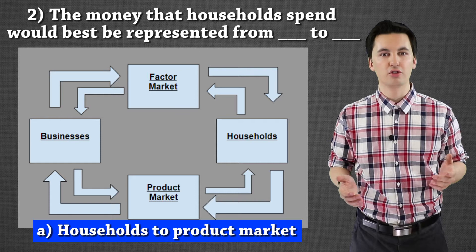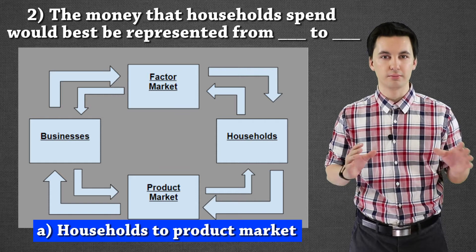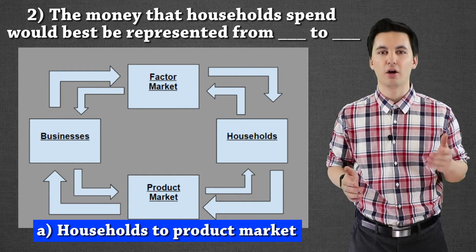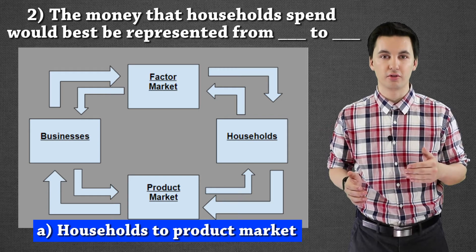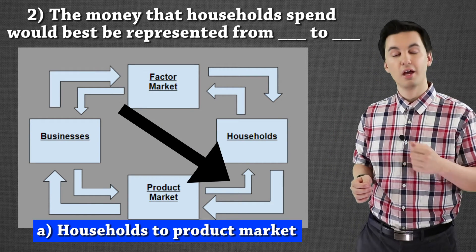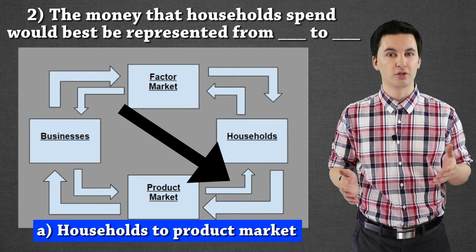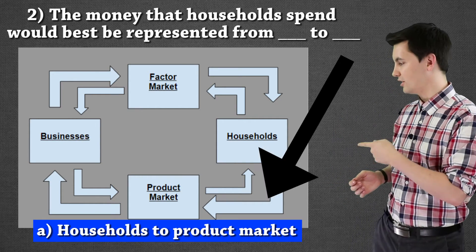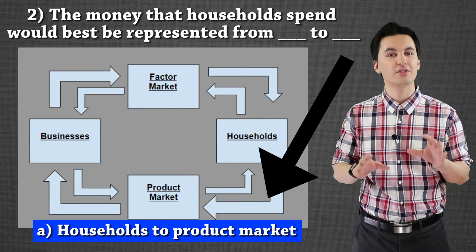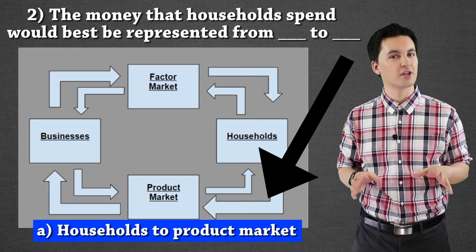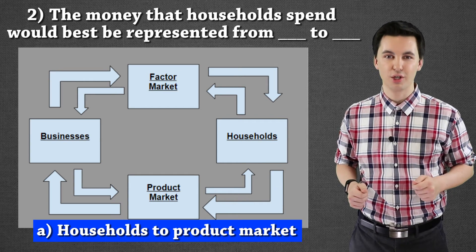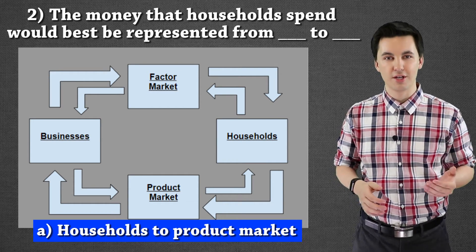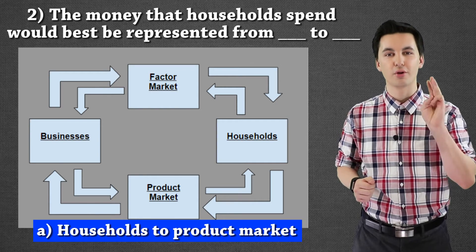So now, even though we don't know where the arrows are going originally on this model, we have figured out that our goods and services are going this way, and our households which are spending everything — our money — is going the other way. Hopefully this is making sense. We just covered one of the tips that we started the video off on. Now let's take it up a little bit more in difficulty and go on to question number three.